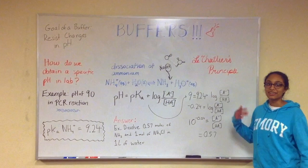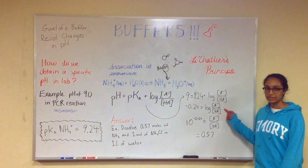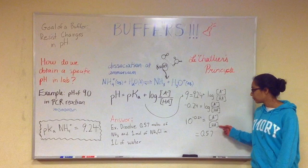And so as we simplify this, we get negative 0.24 equals log base over acid. And we can rewrite this expression so that it says 10 to the negative 0.24 equals the concentration of base over the concentration of acid. And so we can simplify that to 0.57.